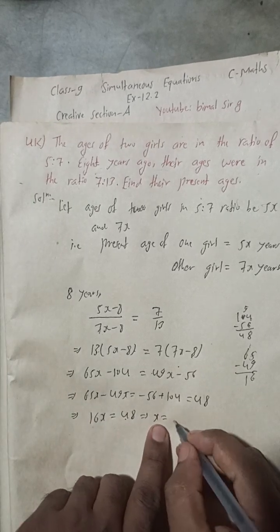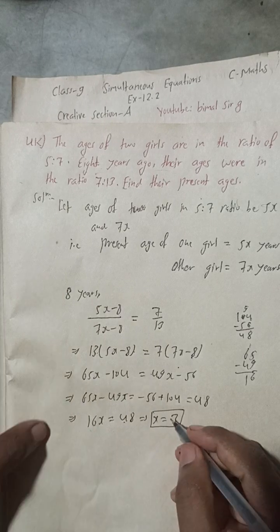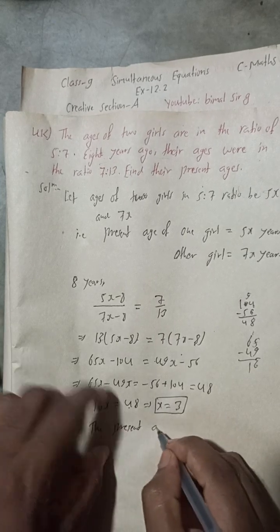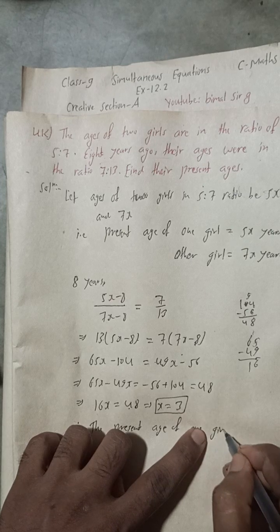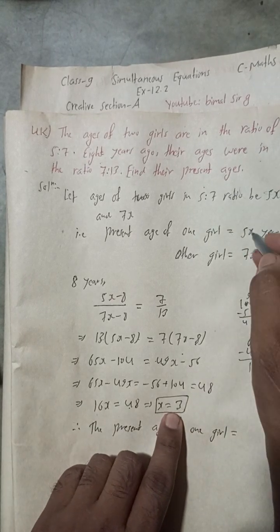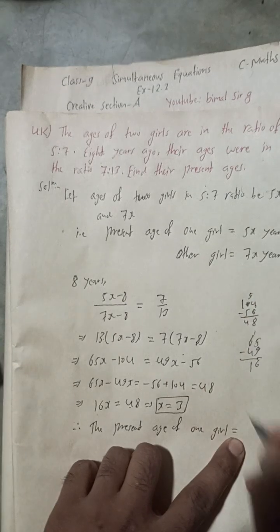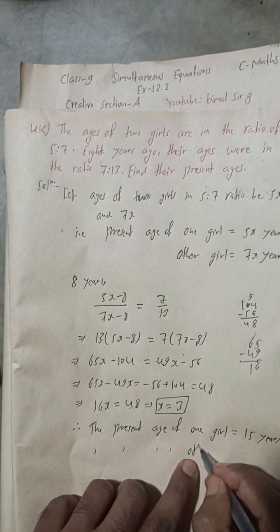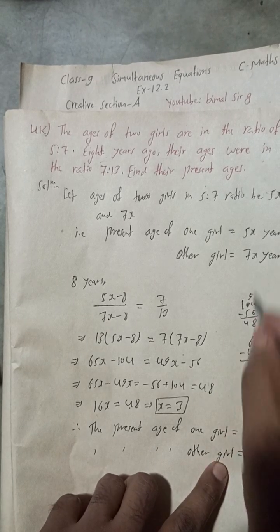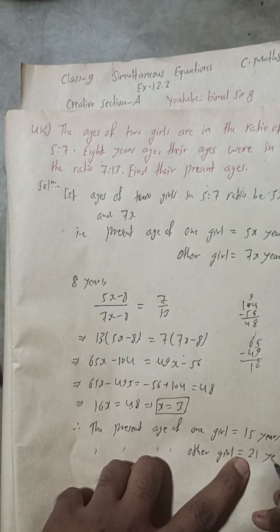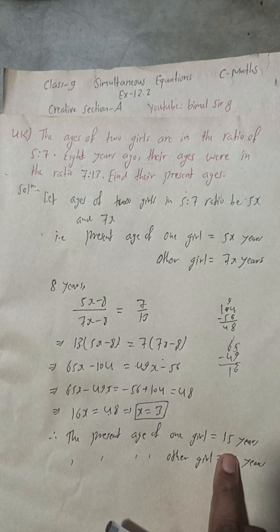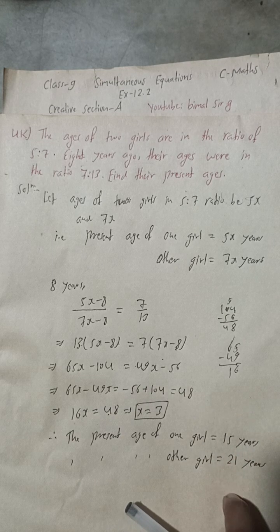So 16x = 48, which implies x = 48 ÷ 16 = 3. Therefore, the present age of one girl is 5x = 5 × 3 = 15 years, and the present age of the other girl is 7x = 7 × 3 = 21 years.